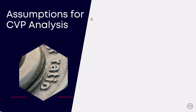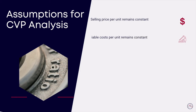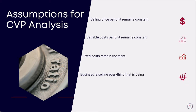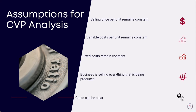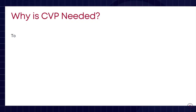For example, we assume that the selling price per unit will always remain constant. Similarly, we assume that variable costs per unit will also remain constant, and so would the total fixed costs. The truth is, this is rarely the case in the real world. We also assume that a business will sell everything that they produce, and that it is always possible to differentiate between fixed and variable costs. Despite these assumptions falling flat occasionally, cost-volume-profit analysis is a widely used and popular management tool that helps us make better decisions.